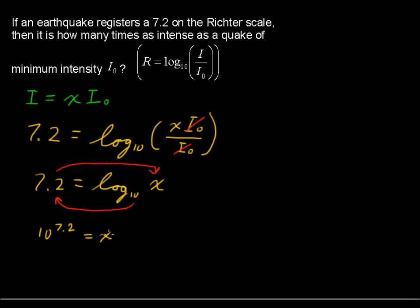And again, x is that number that we're multiplying by the minimum intensity. So that's our answer. And 10 to the 7.2 equals 15,848,932. It is almost 16 million times as intense.